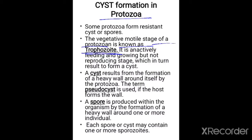A cyst is formed by the protozoan forming a heavy wall around itself. A pseudocyst is formed by the host — whenever the host forms the wall around the organism it is called a pseudocyst, and whenever the wall is formed by the protozoan itself it is called a true cyst. A spore is produced within the organism by the formation of a heavy wall around one or more individuals, and each spore or cyst may contain one or more sporozoites.